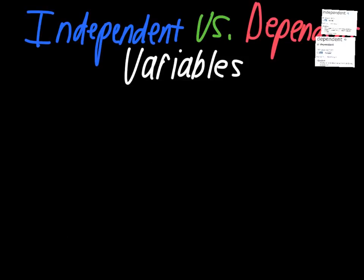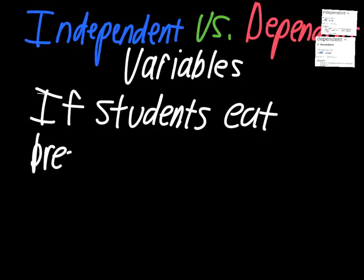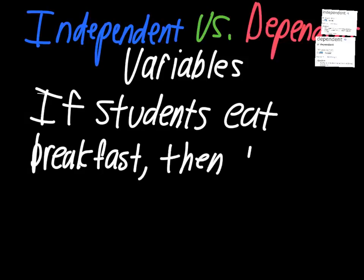To give you a simple example of a hypothesis that you might have to analyze for independent and dependent variables, we'll look at a simple experiment we could do in class. We would come up with a hypothesis that says: if students eat breakfast, then they will earn better grades.